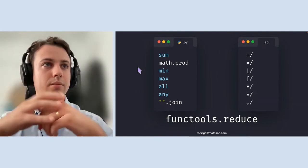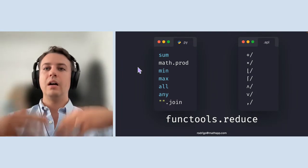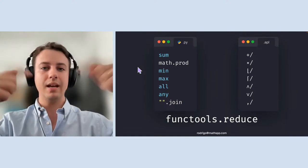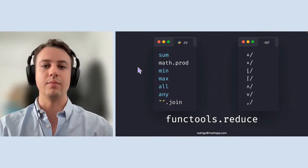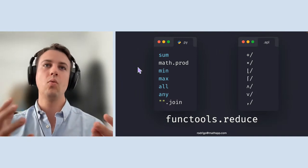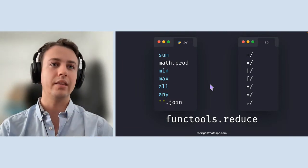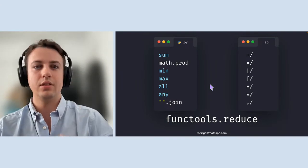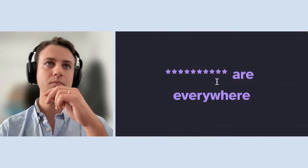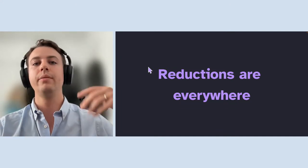By understanding that there are connections between all these seemingly different ideas, it becomes easier to go out in the world and keep making new connections — discovering how apparently different ideas relate to each other. That's what knowledge is about. APL made this connection very clear; there's no way you can learn APL and not make the connection. So many Python functions are, or could be written as, reductions.